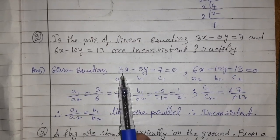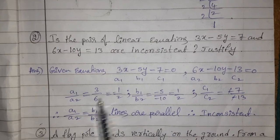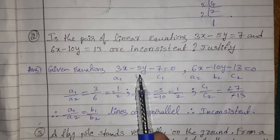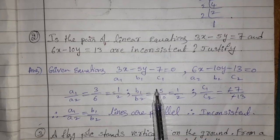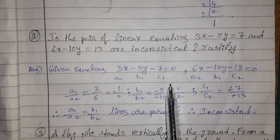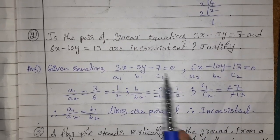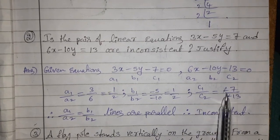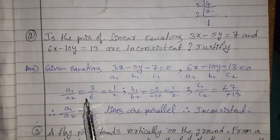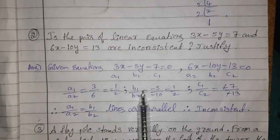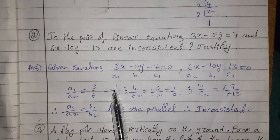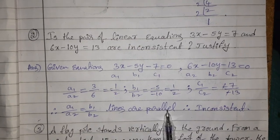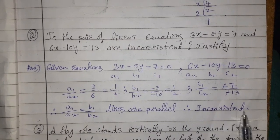Consider a₁/a₂ = 3/6 = 1/2. And b₁/b₂ = −5/−10 = 1/2. But c₁/c₂ = −7/−13, which is not equal to 1/2. Since a₁/a₂ = b₁/b₂ ≠ c₁/c₂, the lines are parallel. Therefore the system is inconsistent.